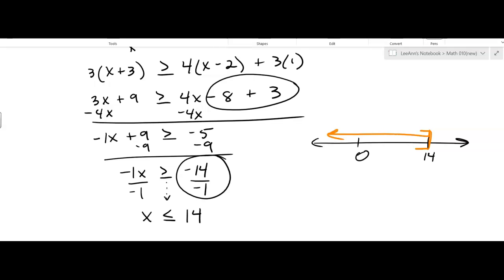All right, how do we write it in interval notation? We go from left to right, from negative infinity up to 14 with a square bracket, and that is how we do that problem.